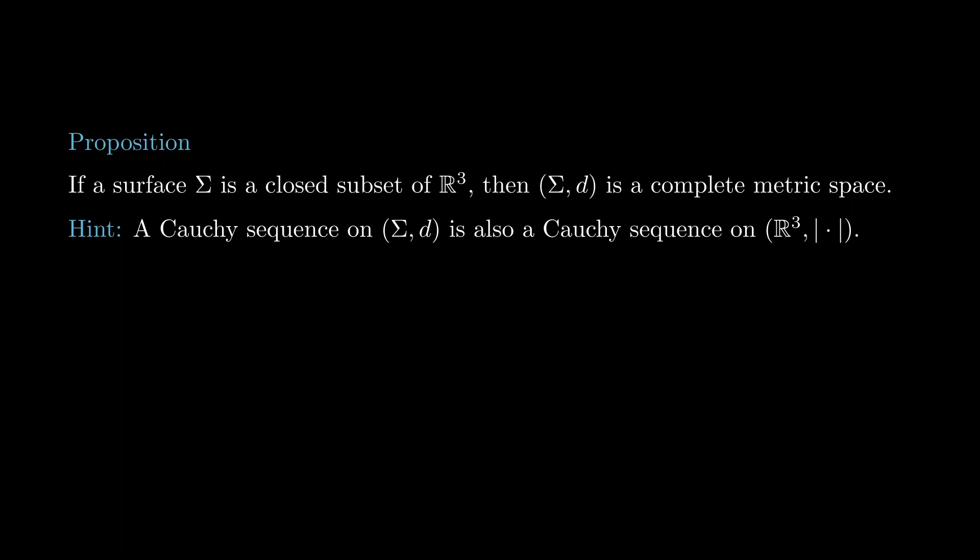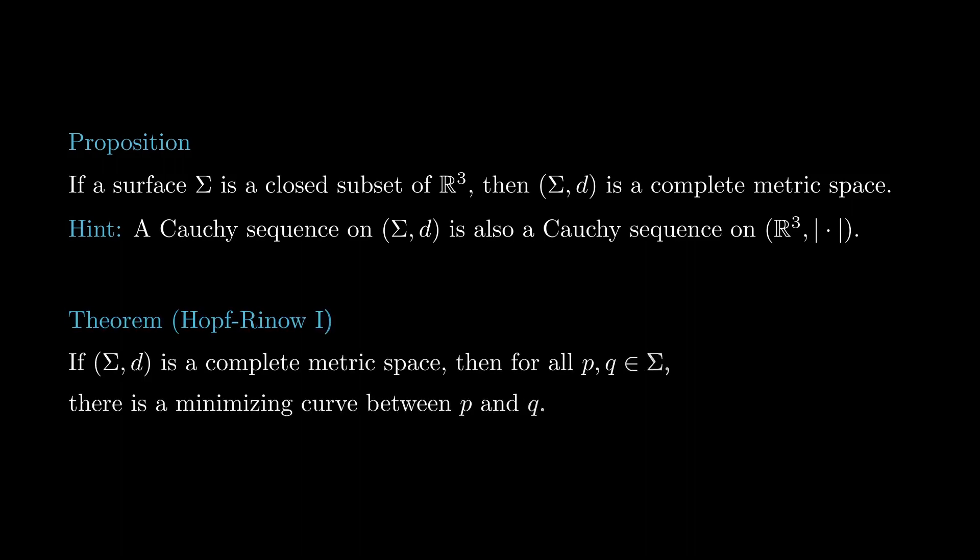A slightly deeper result is the following version of the Hopf-Rinow theorem. It states that if (sigma, d) is a complete metric space, then between any two points p and q on sigma, there is a minimizing curve connecting them. The proof of this theorem is not that difficult, but it is somewhat long, so we will leave it for a later lesson.